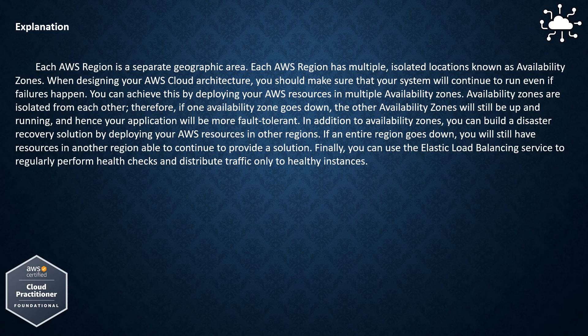In addition to Availability Zones, you can build a disaster recovery solution by deploying your AWS resources in other regions. If an entire region goes down, you will still have resources in another region able to continue to provide a solution. Finally, you can use the Elastic Load Balancing service to regularly perform health checks and distribute traffic only to healthy instances.